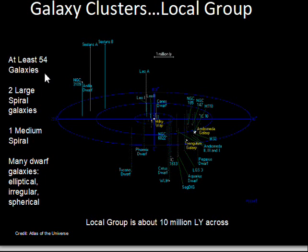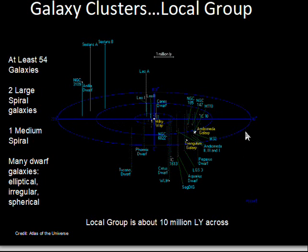The count of galaxies in our local group is still ongoing because some very small galaxies are difficult to detect through the gas and dust in our own galaxy that blocks our view. Major characteristics of the local group: there are two large spiral-type galaxies — the Milky Way and Andromeda — a medium-sized spiral galaxy, Triangulum (M33), and a lot of dwarf galaxies: small ellipticals, irregulars, and spherical galaxies. We're talking about 10 million light years across the span of the local group, roughly, with no sharp edge. For more diagrams, do a Google search on Atlas of the Universe.